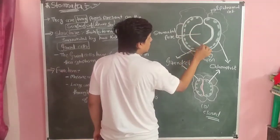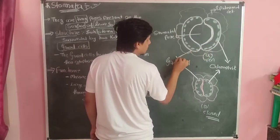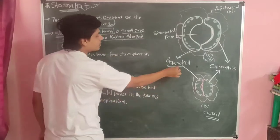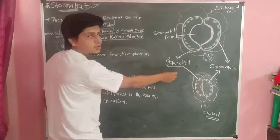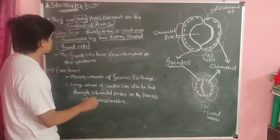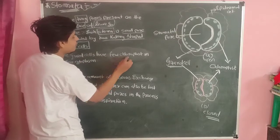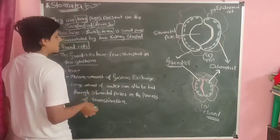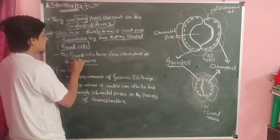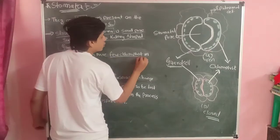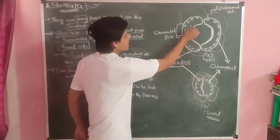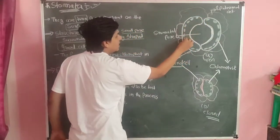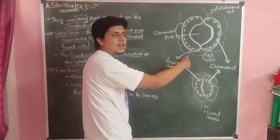These are known as guard cells. The guard cells have a few chloroplasts in their cytoplasm.